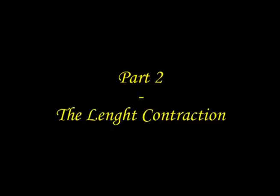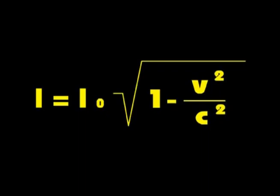Part 2: The Length Contraction. With a change in velocity, an object in one system shortens in the direction of the velocity vector relative to another system. L means the length of the object observed by the external observer. L₀ means the length of the object in the moving system. V is the velocity of the moving system, and c is the velocity of light.